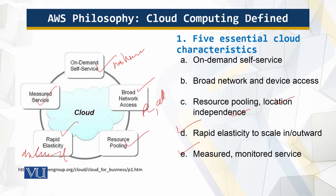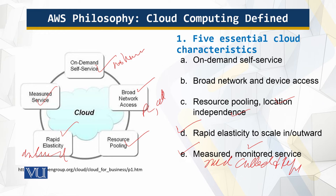Finally, everything has to be measured and monitored. The service automatically controls and optimizes resource use by leveraging a metering capability at a level appropriate to the type of service. Resource usage can be monitored, controlled, and reported. This covers the five essentials of cloud computing.